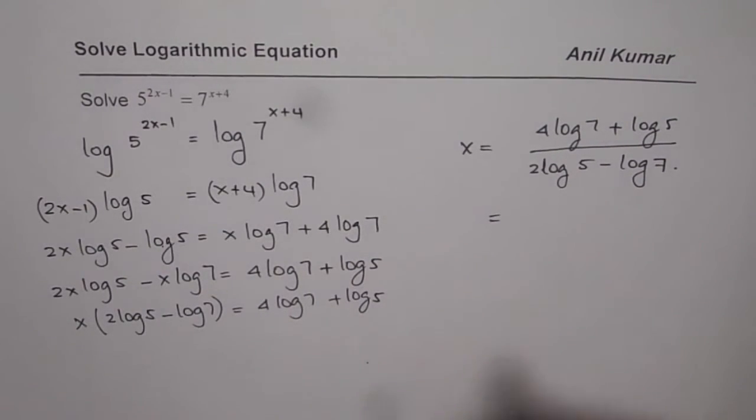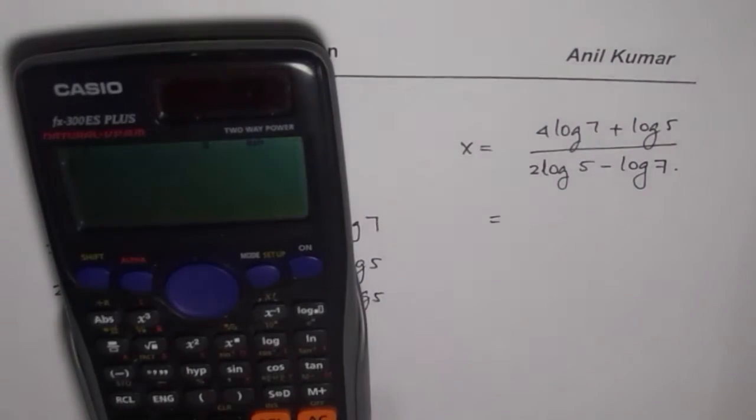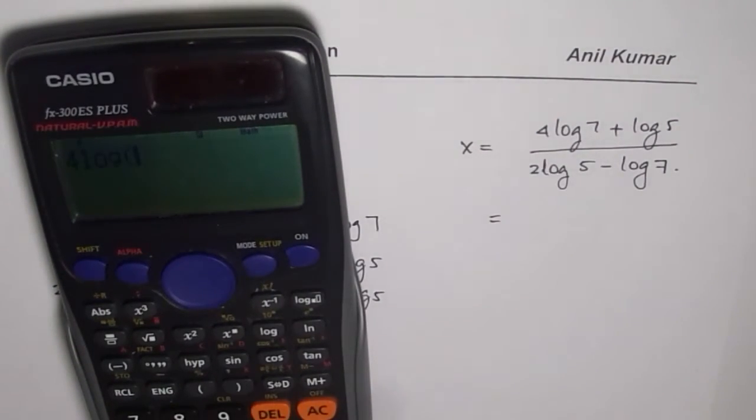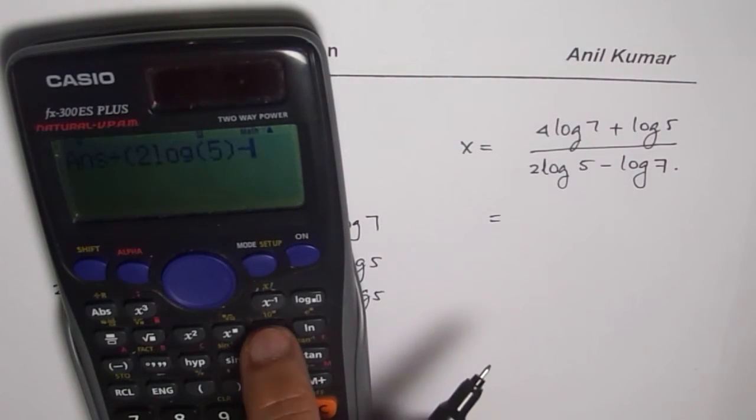Now we can use calculator to calculate this value. So we have 4 times log of 7 plus log of 5, and we will divide that by, let's put it in brackets, 2 times log of 5 minus log of 7.